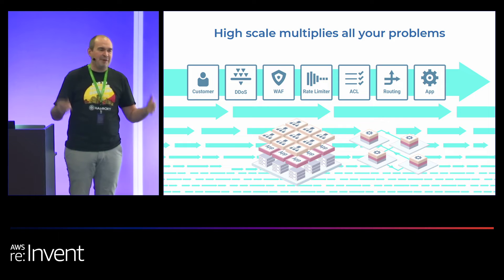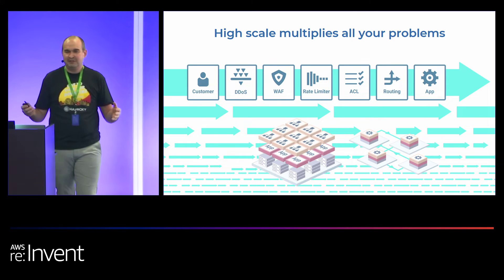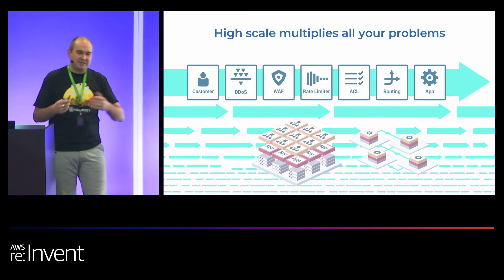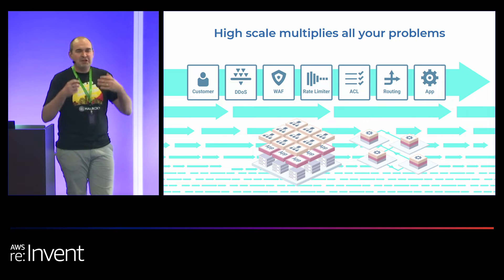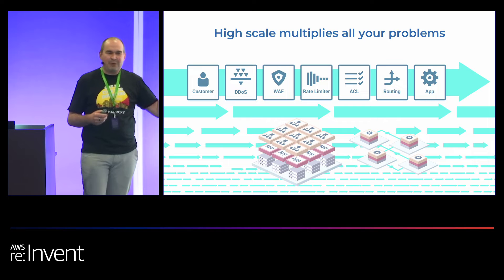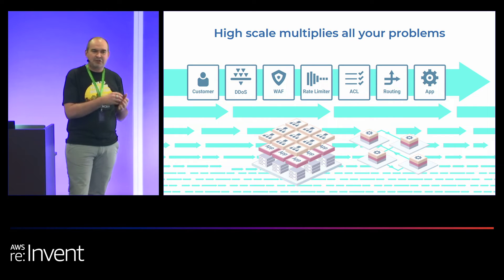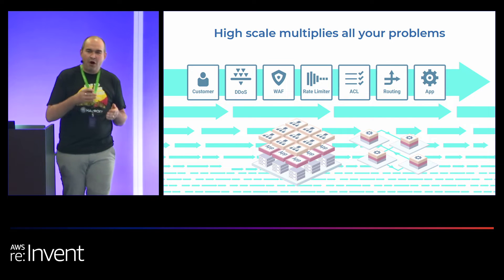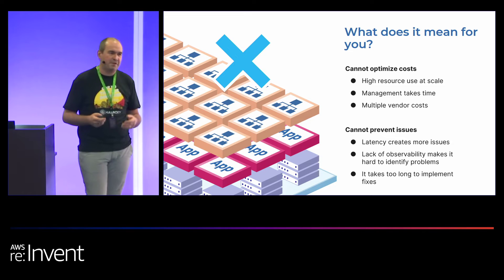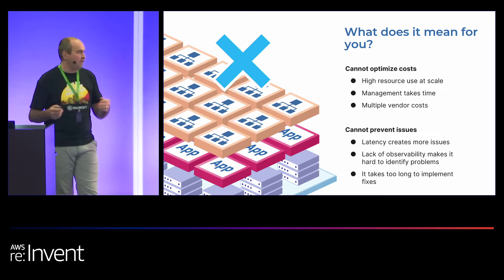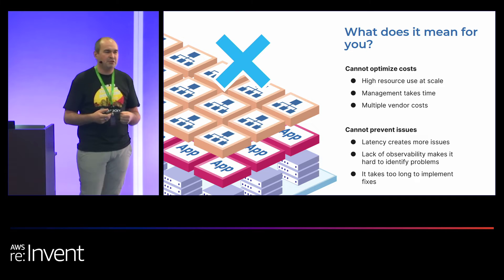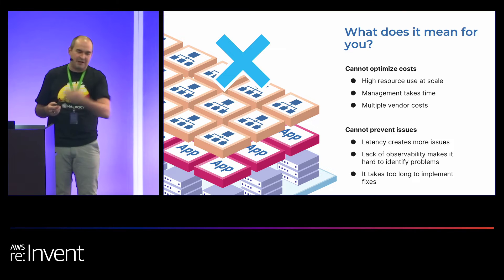I have customers that do hundreds of thousands of requests per second, or 10 million requests per second across thousands of apps. What happens is that a lot of these are separate layers — DDoS protection as a layer, rate limiting as a layer, a web application firewall as a layer. These layers grow in vendors, costs, hops, and latency. You can't optimize your costs because you're using a lot of resources for load balancing. Management takes time, and ultimately you're increasing the latency of your requests because they go through many hops to get to your application and back.